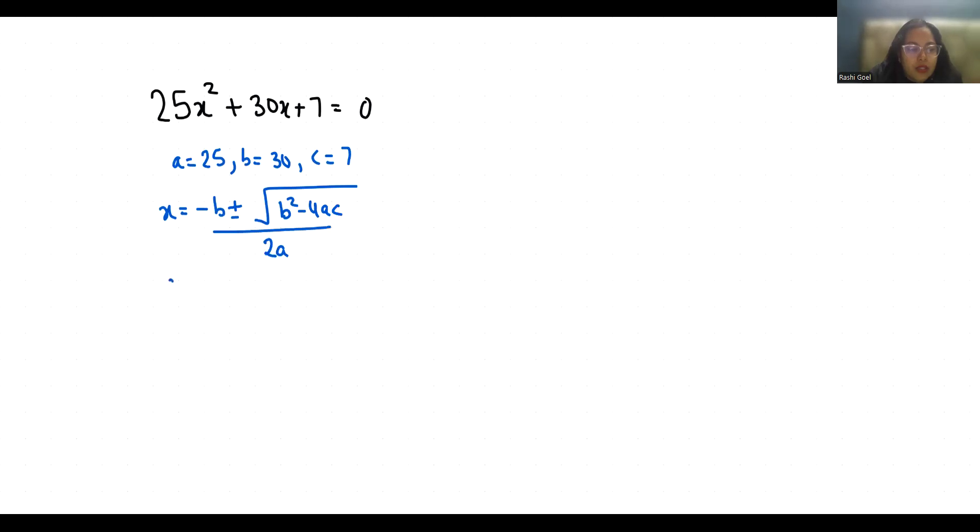So x = (-30 ± √(30² - 4×25×7)) / (2×25).